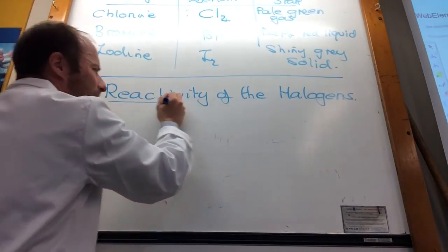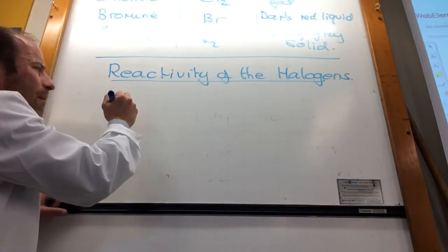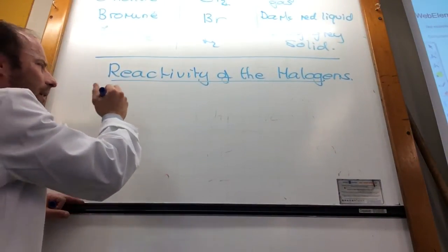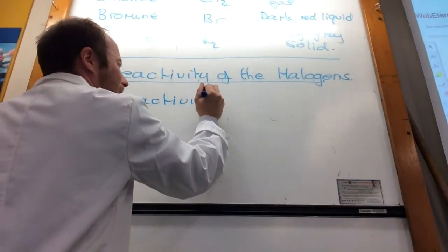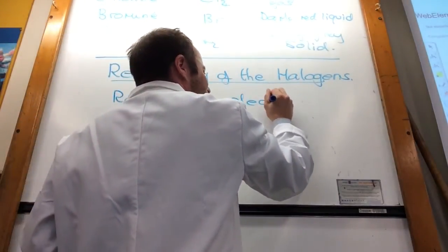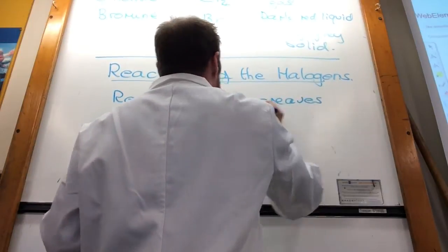So if we do the reactivity of the halogens, the most reactive halogen is fluorine. Reactivity decreases down the group.